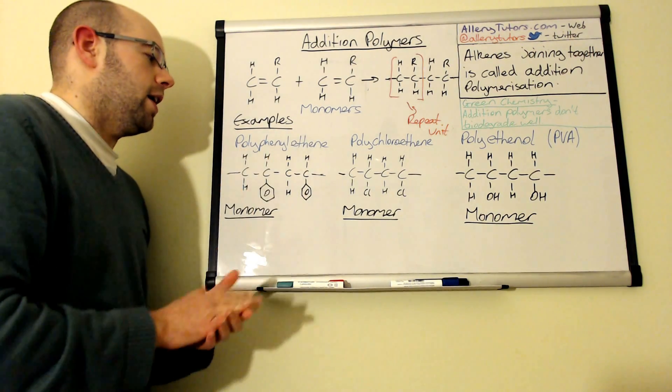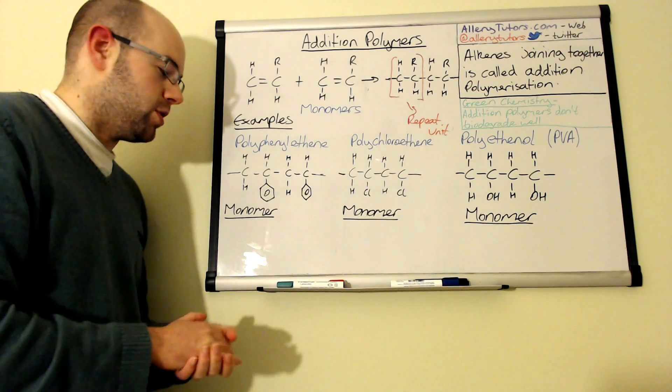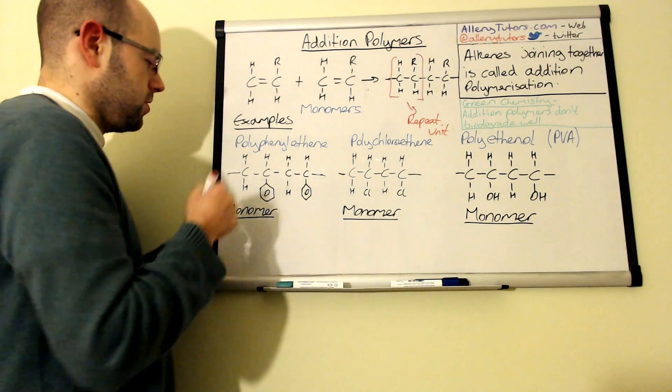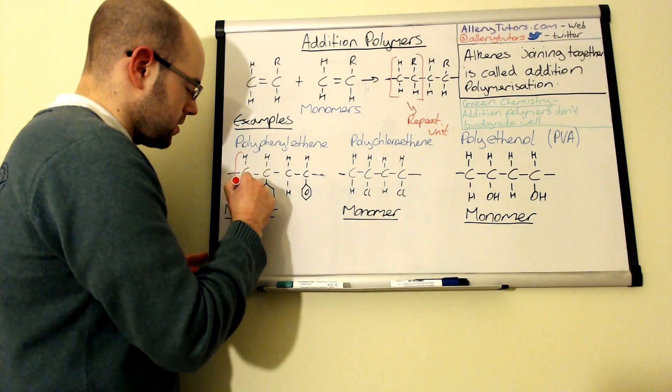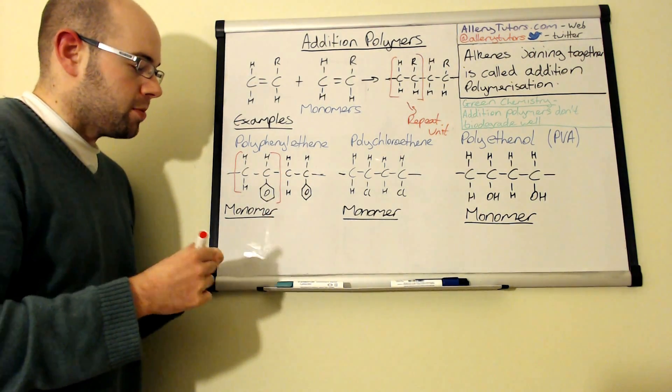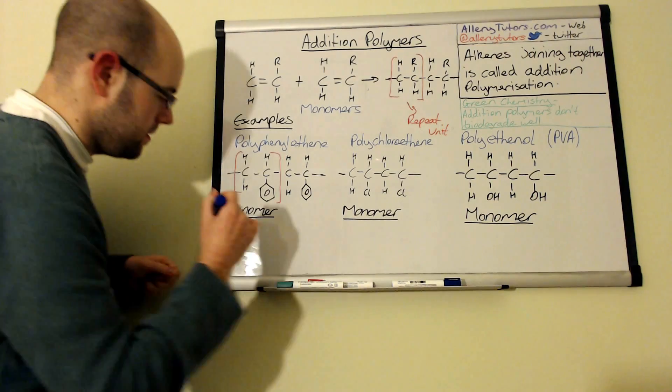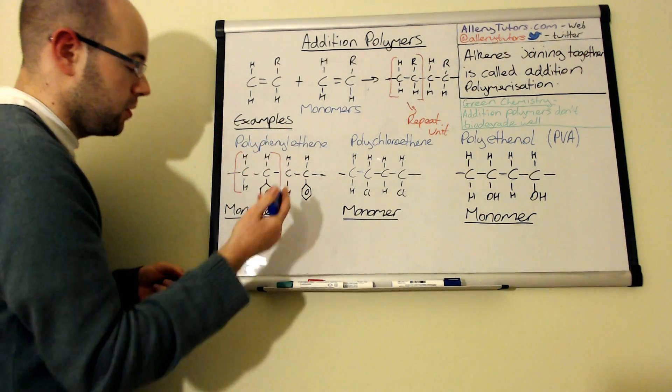This is the structure of it here. We can look at our polymer and we can identify the repeat units and then we can work out our monomer. So we're just going to draw it in red. There's our repeat unit you can see that pretty clearly and so our monomer that makes up this is phenyl ethene.